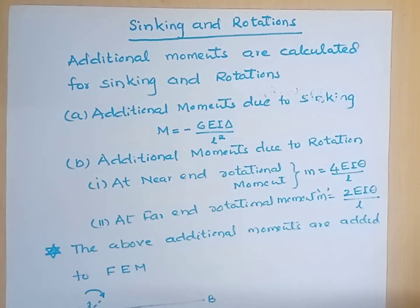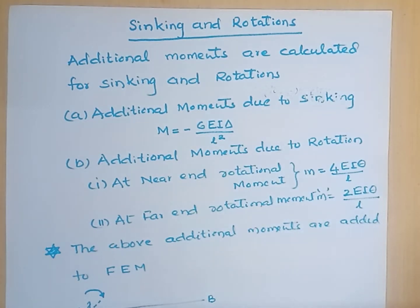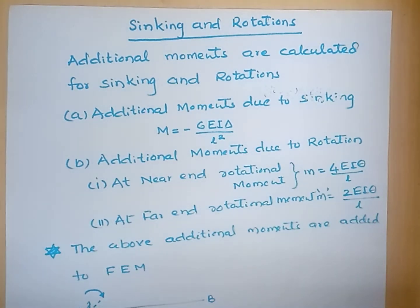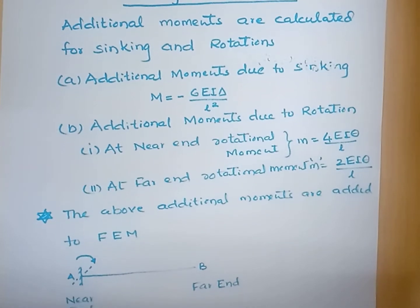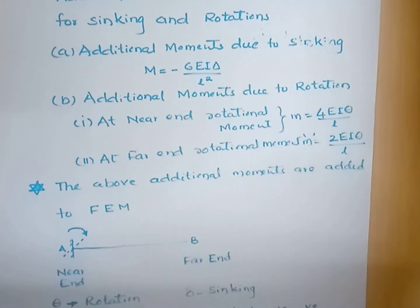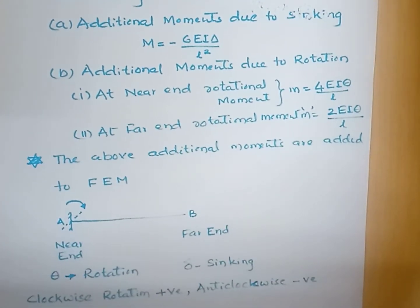In the moment distribution method, 50 percent of the moment is carried from the far end to the near end. The far end moment is 2EI theta by L. These additional moments are added to the fixed end moments due to the load — these are the additional fixed end moments due to rotation and sinking of the supports.